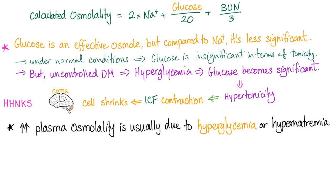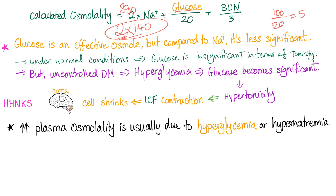Calculated osmolality depends on the big three. Glucose is an effective osmol, but compared to sodium, it's less significant. Why? Sodium is normally 140 and it's paired with something like chloride, so we multiply by 2 — 2 times 140 is 280 osmols. Glucose is normally 100, so 100 over 20 is only 5. Five compared to 280 is insignificant. Under normal conditions, glucose is insignificant in terms of tonicity — sodium is king.